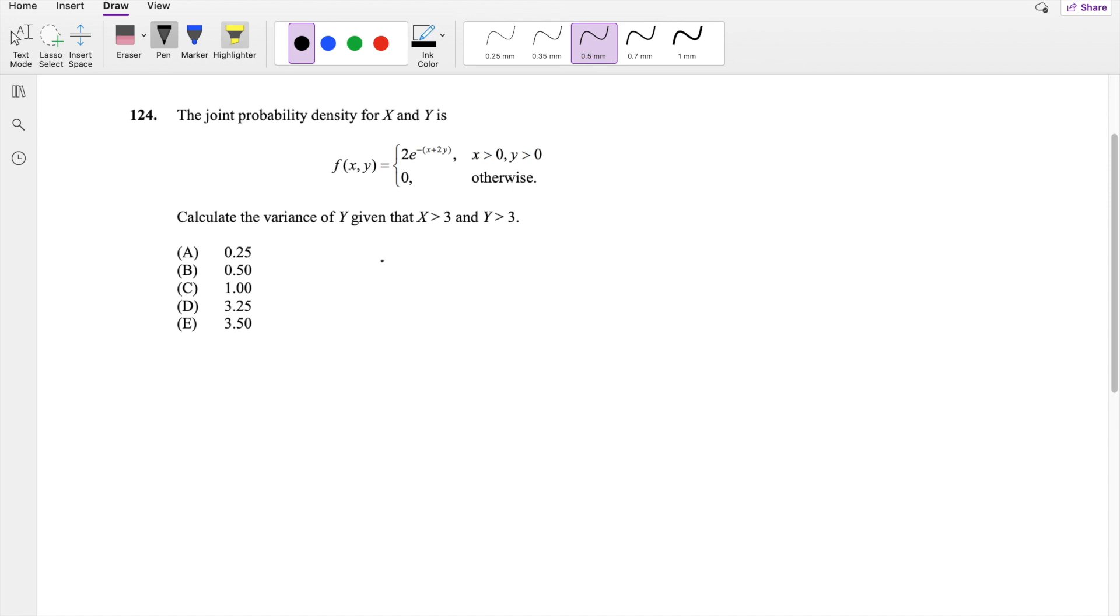So the joint probability density function for x and y is here. And they're asking you to find a variance of y, given that x is greater than 3 and y is greater than 3. But the thing is, we do know that this is indeed an independent function, x and y are independent. And that's because it forms a square, and that is a good sign that it's going to be independent.